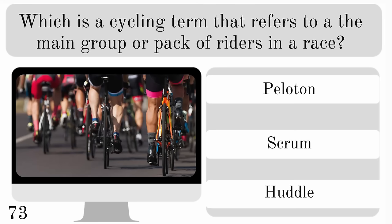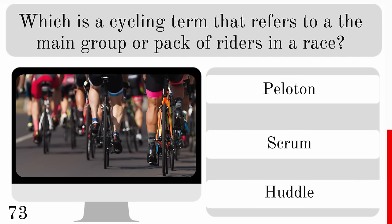Which is a cycling term that refers to the main group or pack of riders in a race? Peloton, scrum or huddle? The answer is peloton.